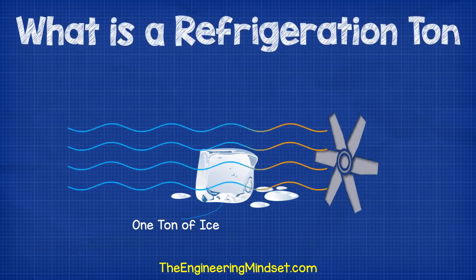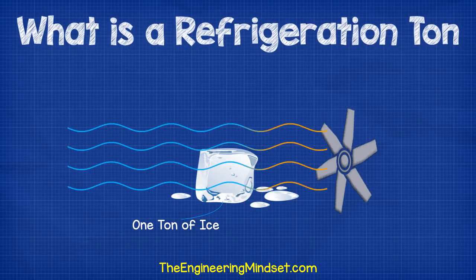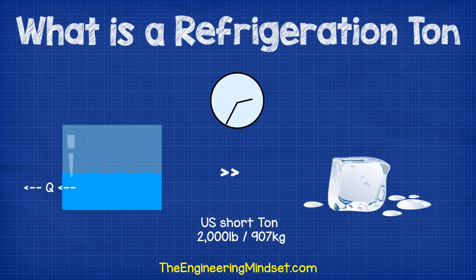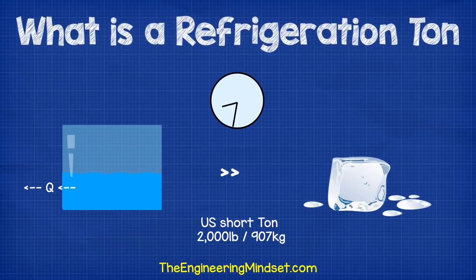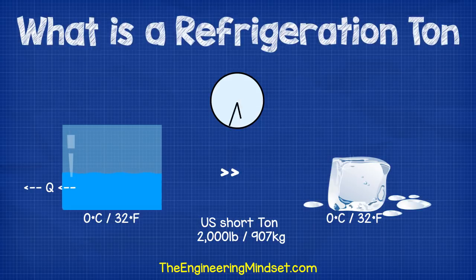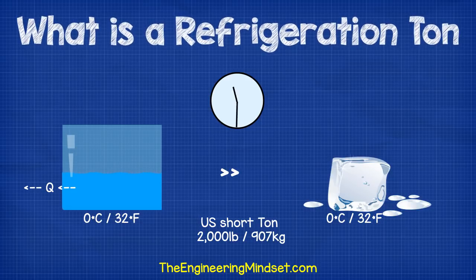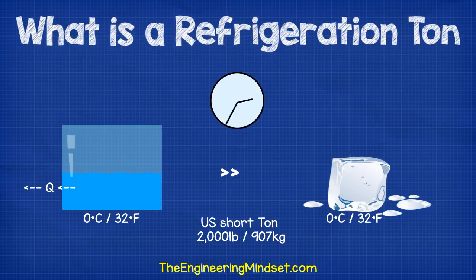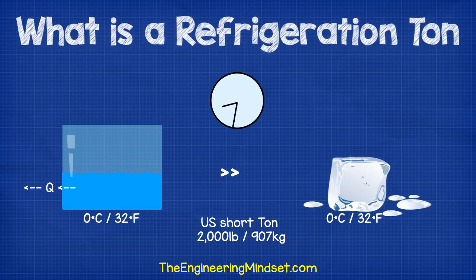The equivalent amount of cooling later became available through vapor compression refrigeration machines. So a ton of refrigeration is how much heat needs to be removed from a US short ton of water to turn it into ice within 24 hours. This is only for the latent heat, so the water would need to be at 0 degrees Celsius, 32 degrees Fahrenheit, and the ice would then also still be at 0 degrees Celsius, 32 degrees Fahrenheit. This is only the energy to cause a phase change of the water — to turn it from a liquid into a solid, so from water into ice. If the water was at room temperature then you would need to remove more heat to bring it down to 0 degrees Celsius, 32 degrees Fahrenheit, before it can be turned into ice.